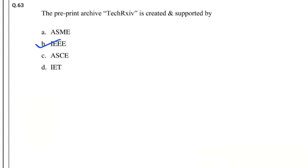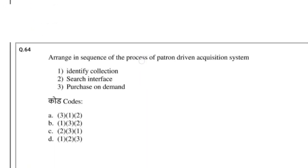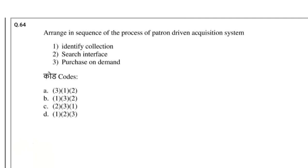Question number 64: Arrange the sequence of the process of a patron-driven acquisition system. The answer is: Identify collection, Search interface, Purchase on demand.